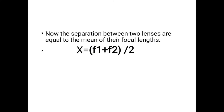The separation between the two lenses is equal to the mean of their focal lengths. Then x = (f1 + f2)/2. This is the condition for an achromatic doublet when the lenses are separated by distance x.